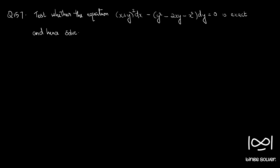Question 157: test whether the equation (x+y)² dx minus (y² minus 2xy minus x²) dy = 0 is exact and hence solve it. Our given equation is of the form M dx plus N dy = 0. The necessary and sufficient condition for a given differential equation to be exact is ∂M/∂y equal to ∂N/∂x.